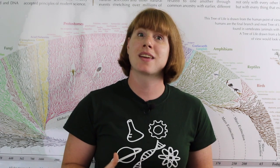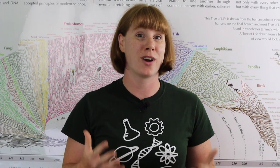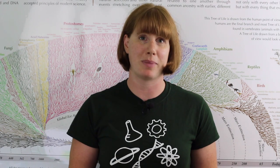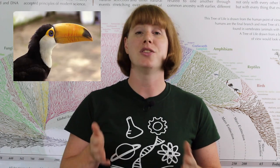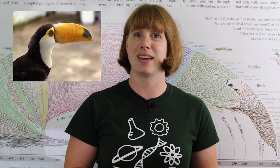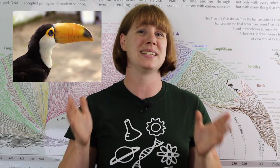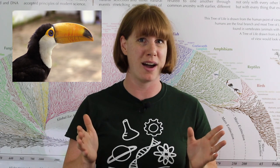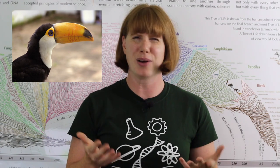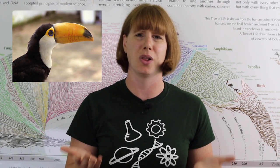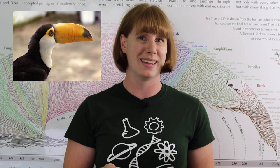Bird beaks come in a wide variety of shapes and sizes to allow for different feeding behaviors. A toucan's beak is about a third of the bird's entire body. So how does a toucan fly with such a large beak?